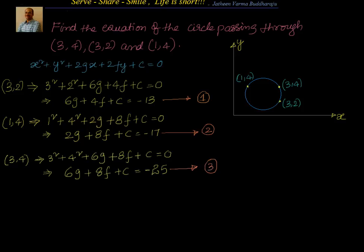Now we have 3 equations and we can solve them using any method you are comfortable with — elimination, substitution, or cross multiplication. Generally we convert this into 2 variables by eliminating one variable first. Looking at Equations 1 and 3, I notice that both have 6g and c, meaning if I subtract Equation 1 from Equation 3, those two variables cancel and I get the value of f directly. I'll choose whichever approach is easiest based on the values.